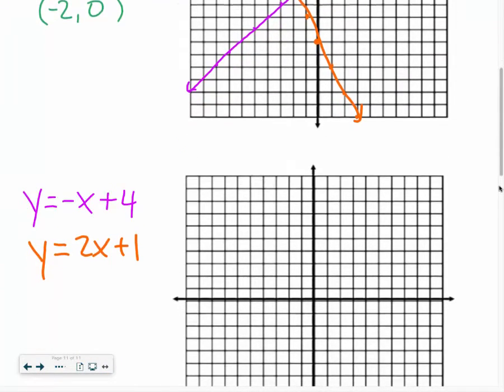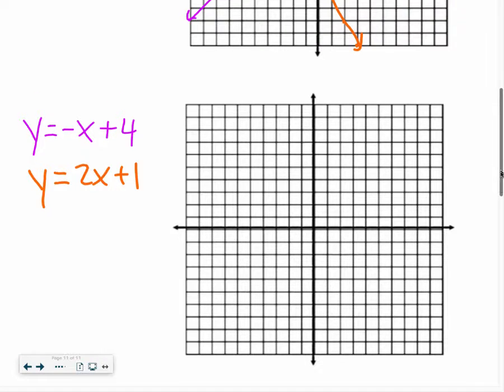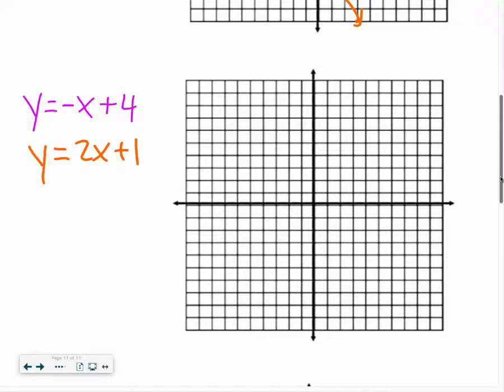Let's try another one. So we start out by graphing. We have our first equation is y equals negative x plus 4. So I go to 4, my y-intercept, and I have a slope of negative 1 this time, so I'm going to go down 1, right 1. I'm going to continue this all the way to help me figure out where these points intersect, or where the lines intersect.